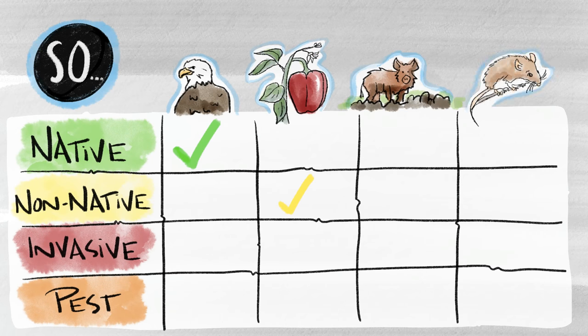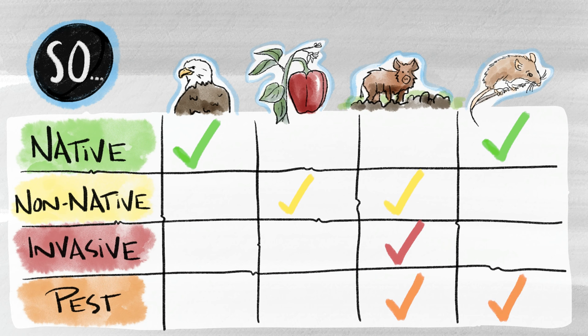Confused? For instance, a feral swine is non-native because it did not originate in the U.S., a pest because it causes damage to a variety of resources, and it's invasive both because it's non-native and causes harm. On the other hand, the white-footed mouse is native because it comes from the U.S., and may be a pest if it causes damage or health issues, but it's not invasive because it is native.